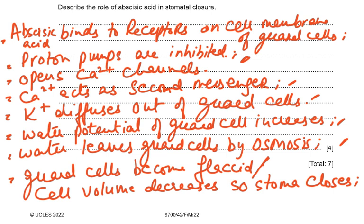This was four marks and the key points to remember are: abscisic acid binds to receptor; proton pumps inhibited; calcium channels open; calcium acts as second messenger; potassium ions diffuse out of guard cells. These are eight possible mark scheme points and you need to give any four of them. Chemical signaling starts at AS level and continues in A2, so these are very important syllabus points.